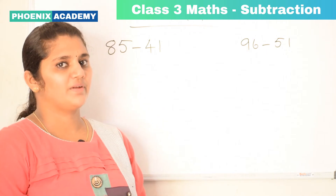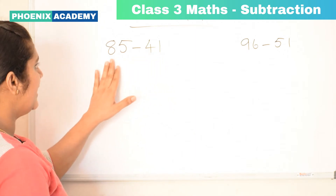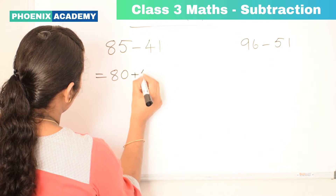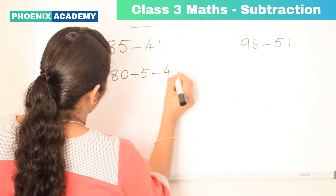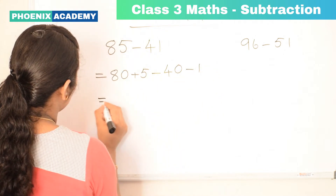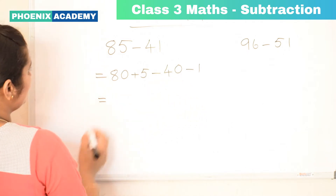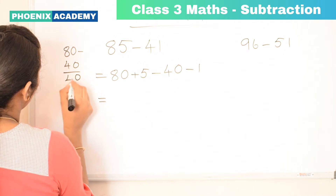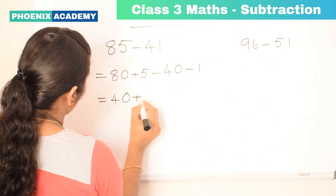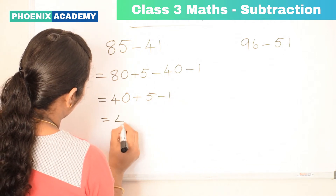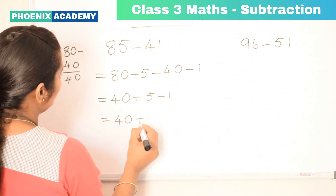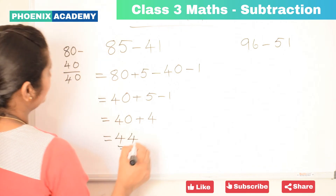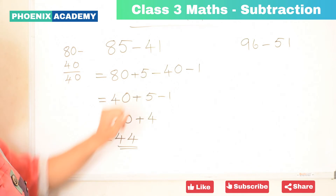The second method is by breaking both the numbers. Let's subtract 41 from 85. We are going to break both the numbers. This is 80 plus 5 minus 40 minus 1. Let's subtract 40 from 80 first: 80 minus 40 is 40. Then 40 plus 5 minus 1: subtract 1 from 5, that is 4. Then add these two numbers: 40 plus 4 is 44. So the difference of 85 and 41 is 44.